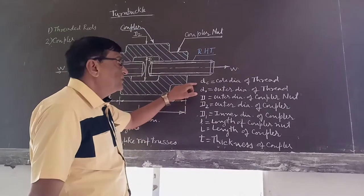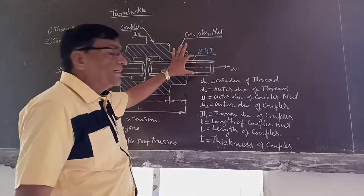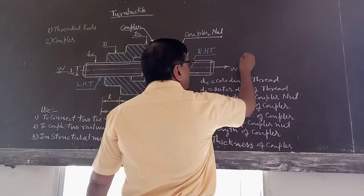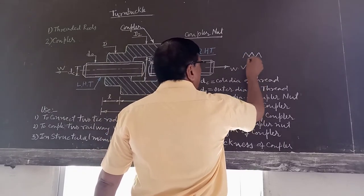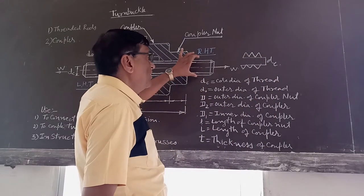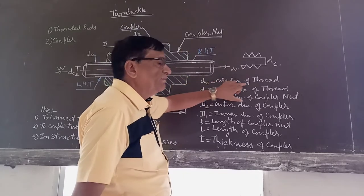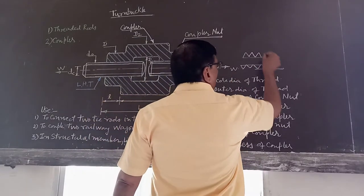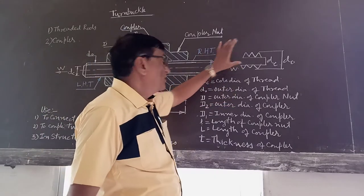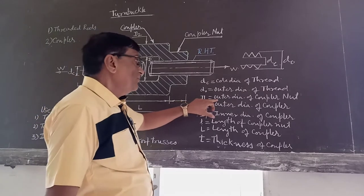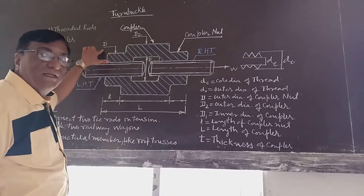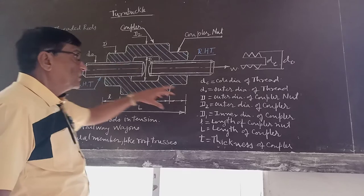Now, in this figure, Dc is the core diameter of the thread. This is the threaded rod — the core diameter means the inner diameter at the base of the threads. Do indicates the outer diameter of the threaded rod. Capital D is the outer diameter of the coupler nut. This is the outer diameter of the coupler nut.